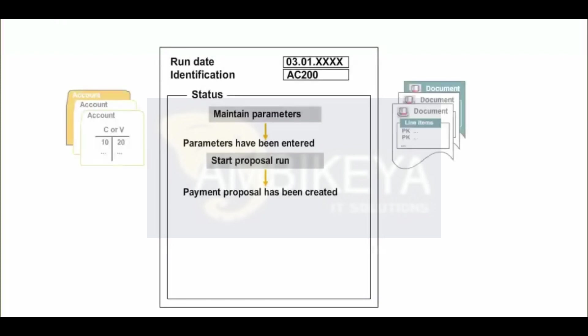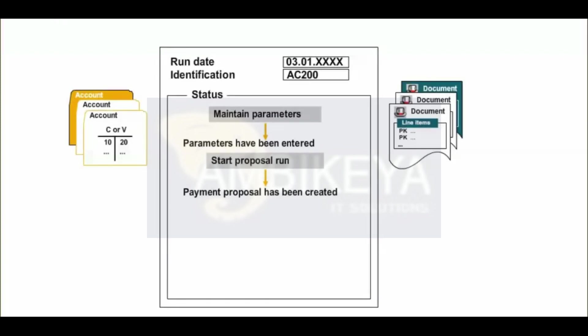Step 3 is checking and editing the payment proposal. This step can be omitted, but you are advised to check that the data is accurate before actually running the payment program.